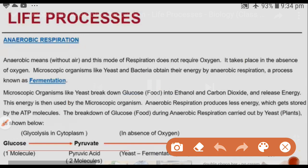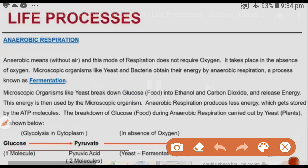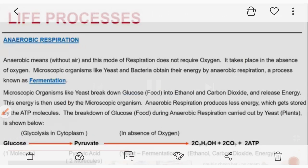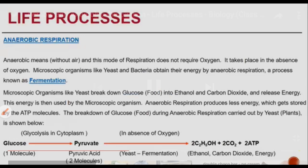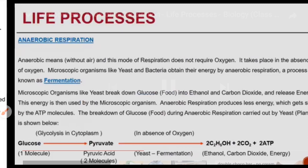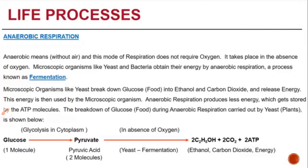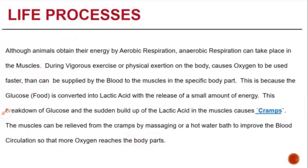Anaerobic respiration produces less energy, which gets stored in ATP molecules. The breakdown of glucose during anaerobic respiration carried out by yeast or plants is shown by the reaction: glucose → pyruvic acid → (absence of oxygen) → C2H5OH (ethanol) + carbon dioxide, releasing only 2 ATP compared to 38 ATP in aerobic respiration.